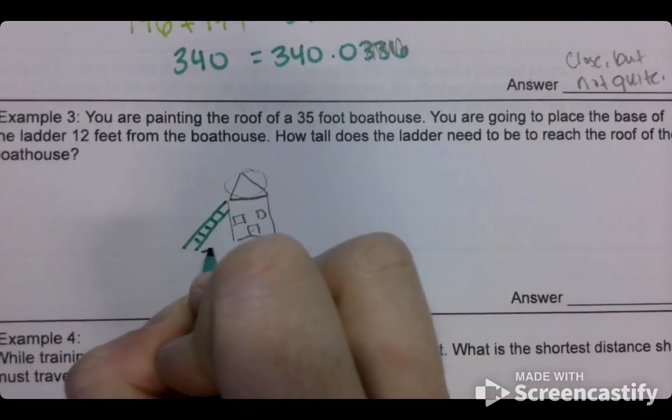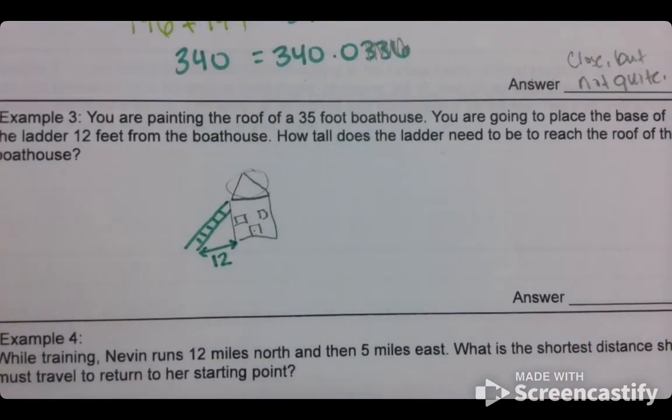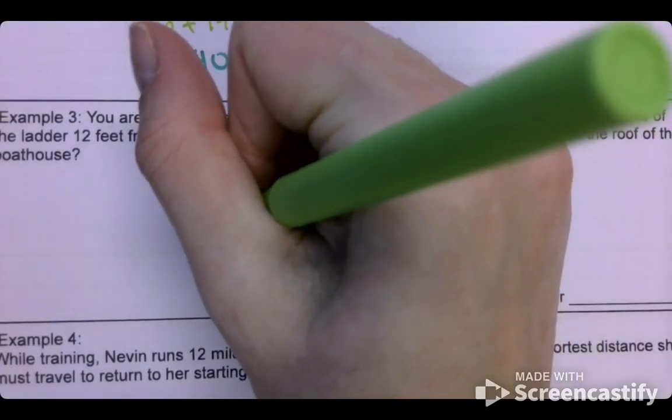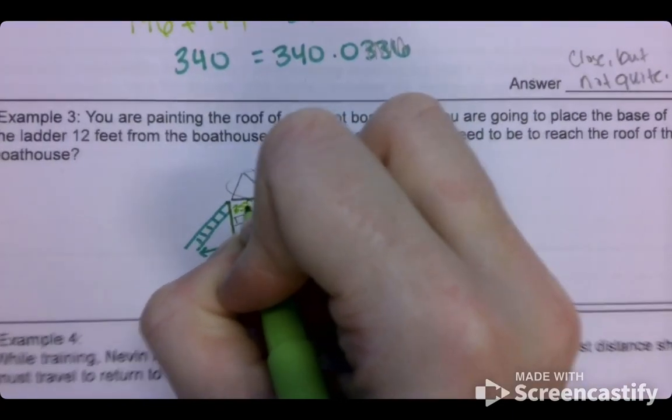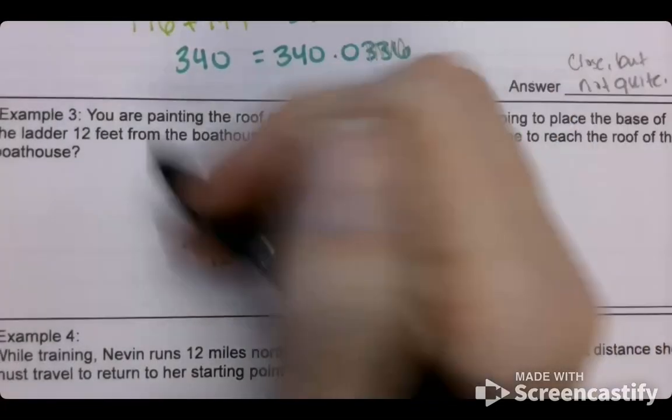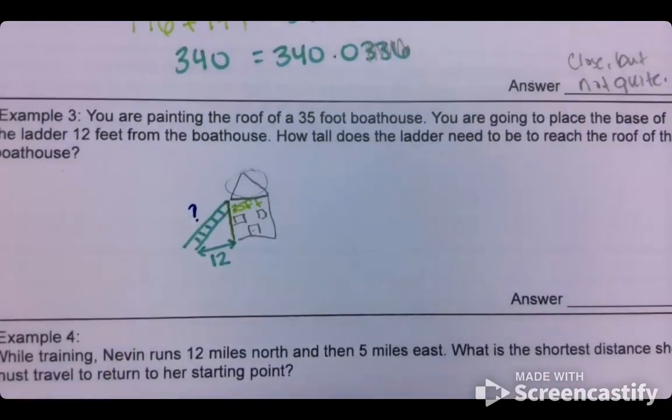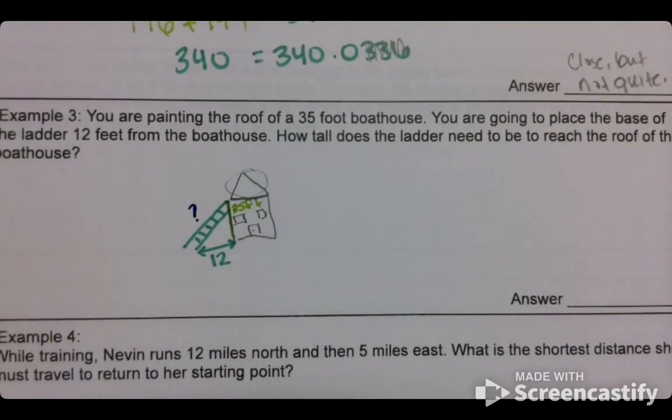They're saying this part right here is 12 feet. And then they're saying the house itself is 35 feet. And they're asking for what does the ladder need to be in order for it to be high enough to reach the top, right?